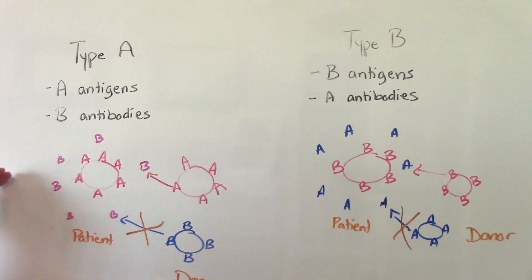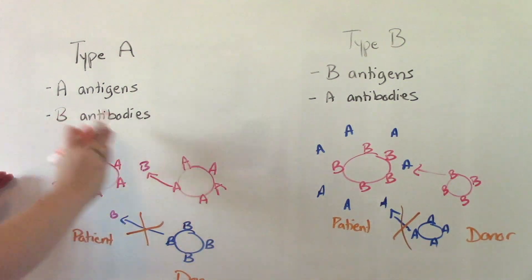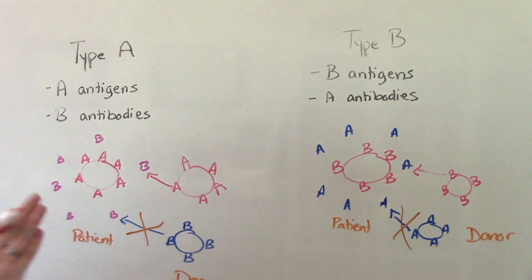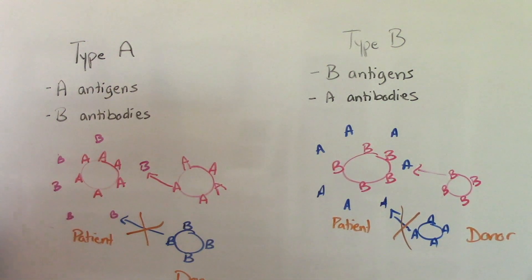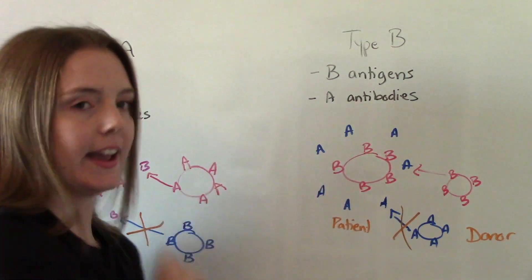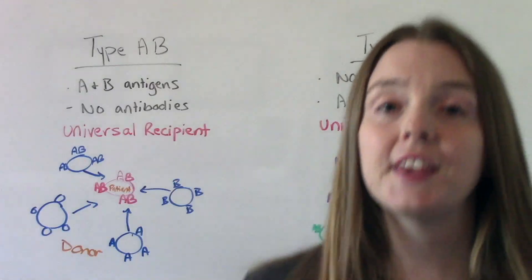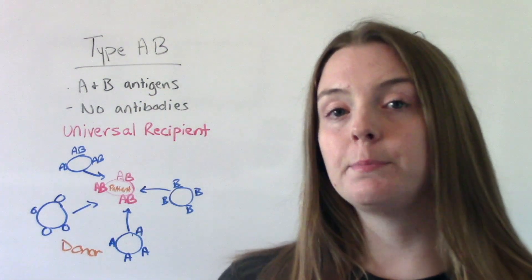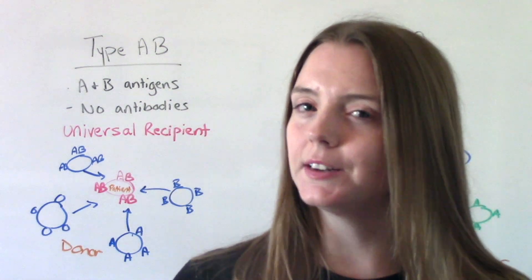So we have our patients, their antigens, and the antibodies — which are always opposite, you probably noticed that. If you're type A, A antigens pair with B antibodies. B antigens pair with A antibodies. They're always going to be opposite of each other. The other two blood groups are AB and O, and they're a little special.